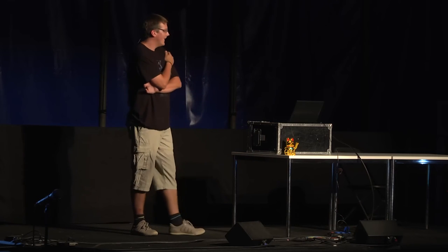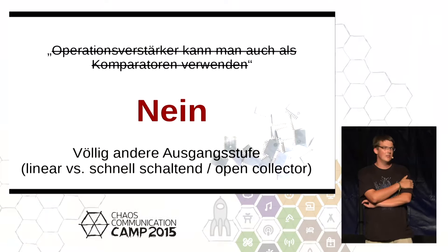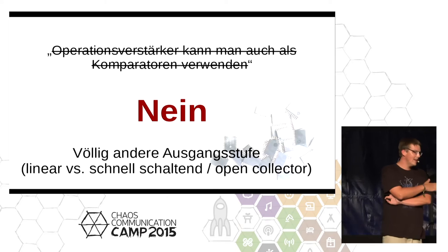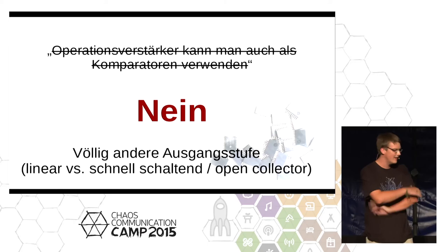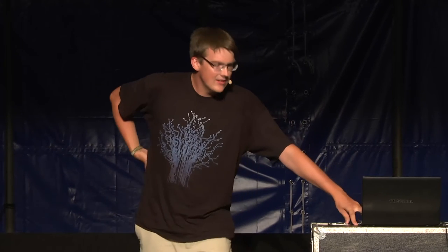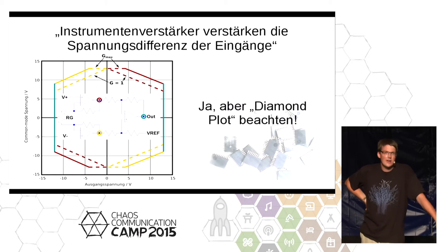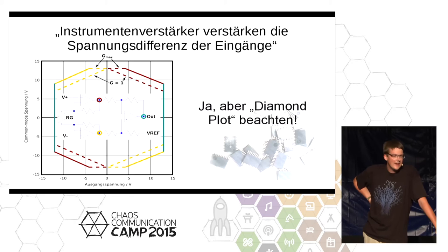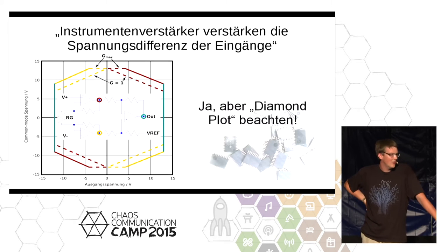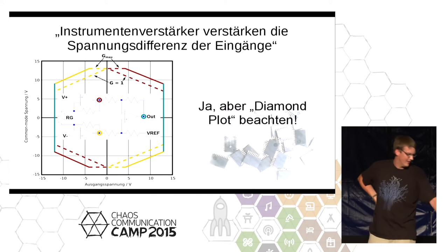You should not use op-amps as comparators. The output stages of a comparator are built completely differently, and so are the input stages. Every device has its own purpose — use a comparator if you need a comparator, and an op-amp if you need an op-amp. The next category is instrumentation amplifiers, which amplify the voltage difference of the inputs by a selectable or fixed value. Is that true? Yes, but there is a very important graph in the datasheet — the diamond plot — because of its shape, which shows in which voltage range the inputs can be for it to function properly. There are some severe restrictions, and you really have to read through this carefully.